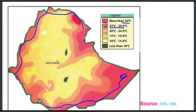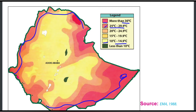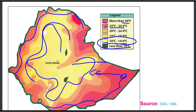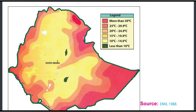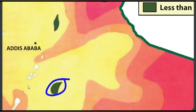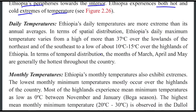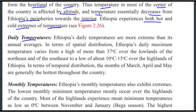Temperatures reach up to 25 to 29 degrees centigrade. The daily temperatures are more extreme than the annual average.